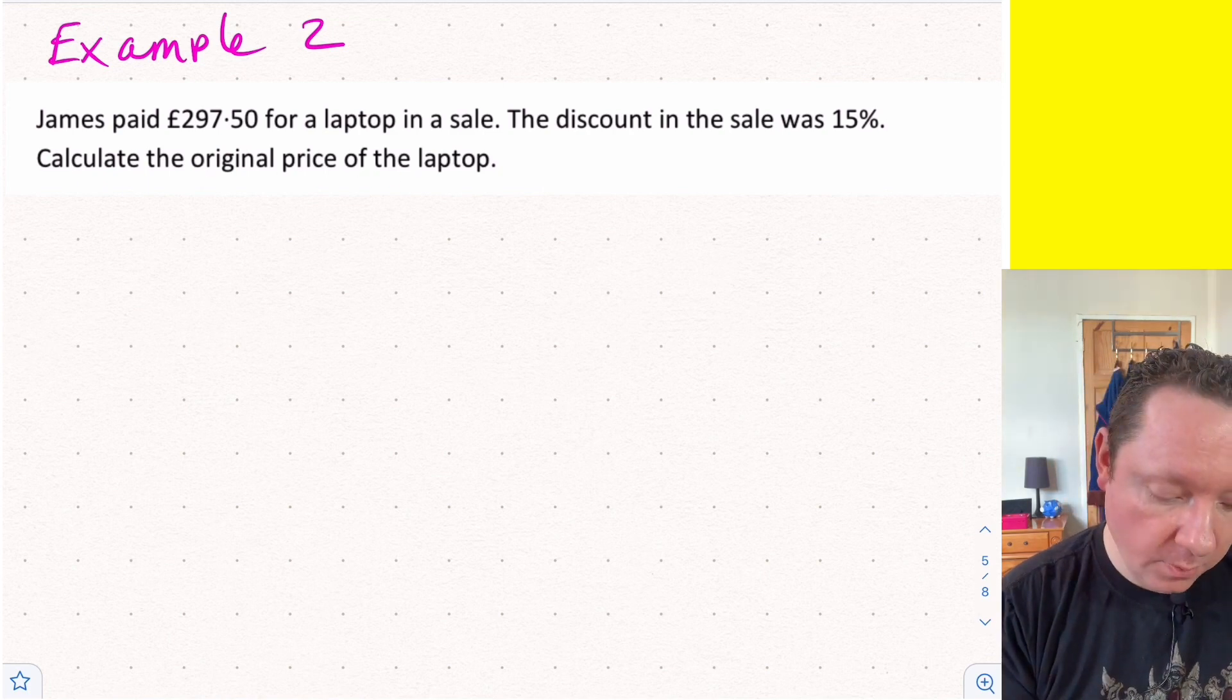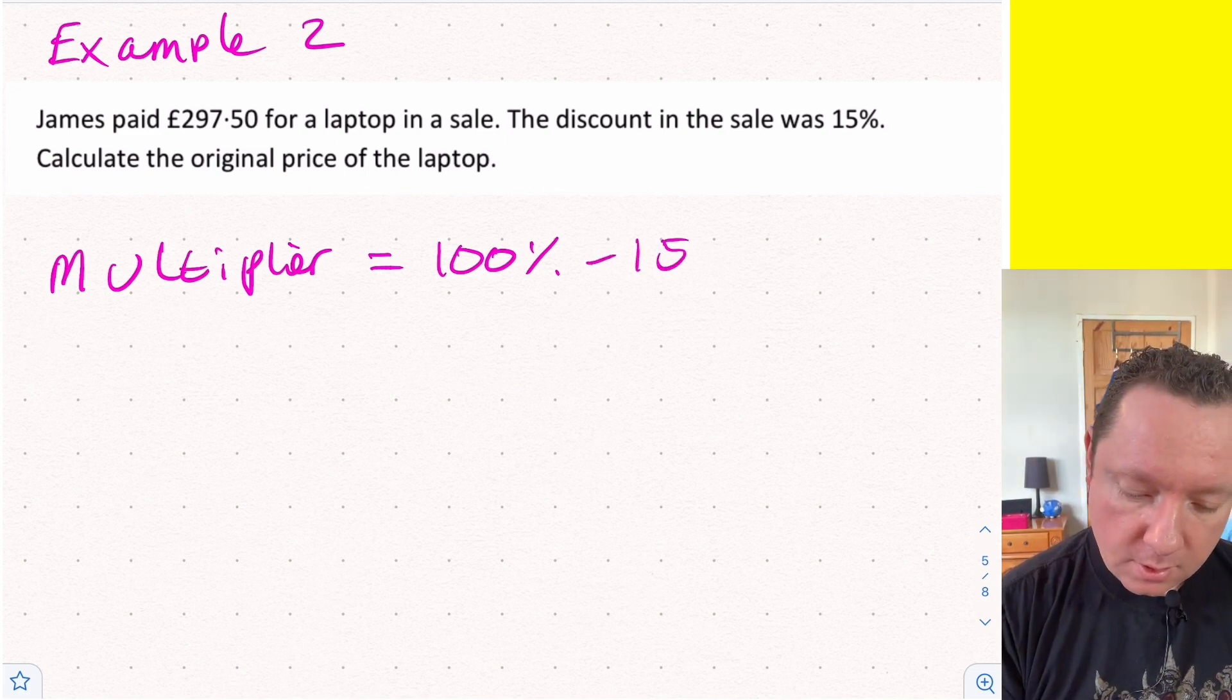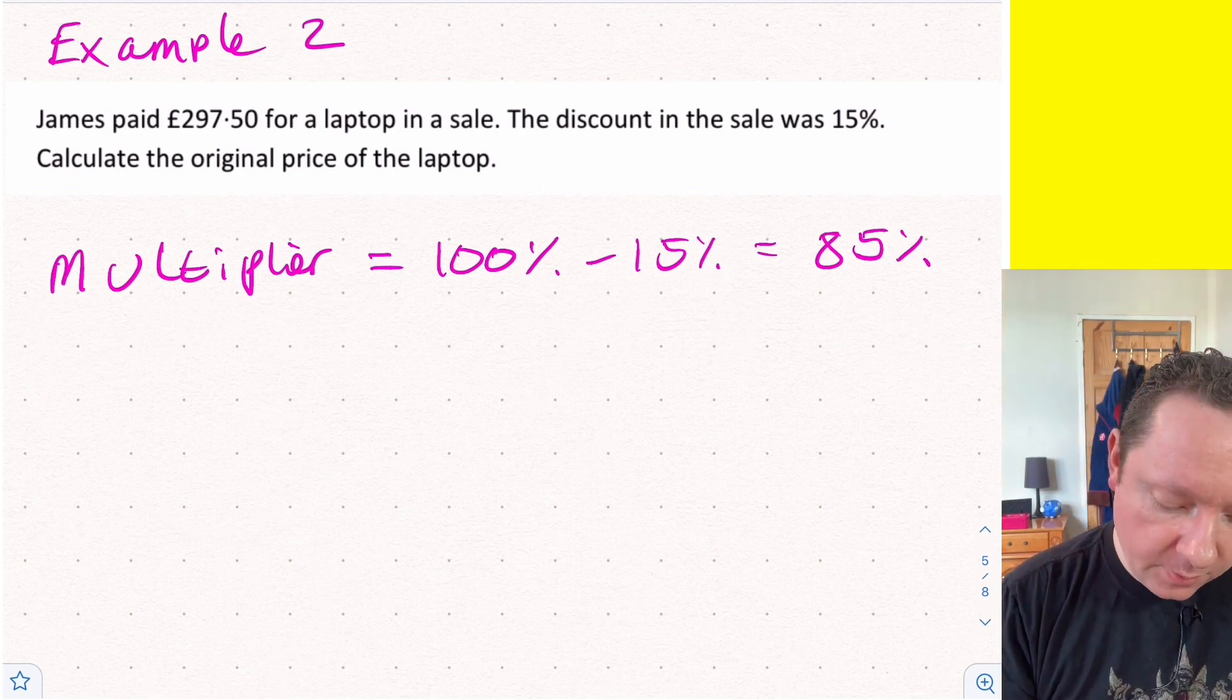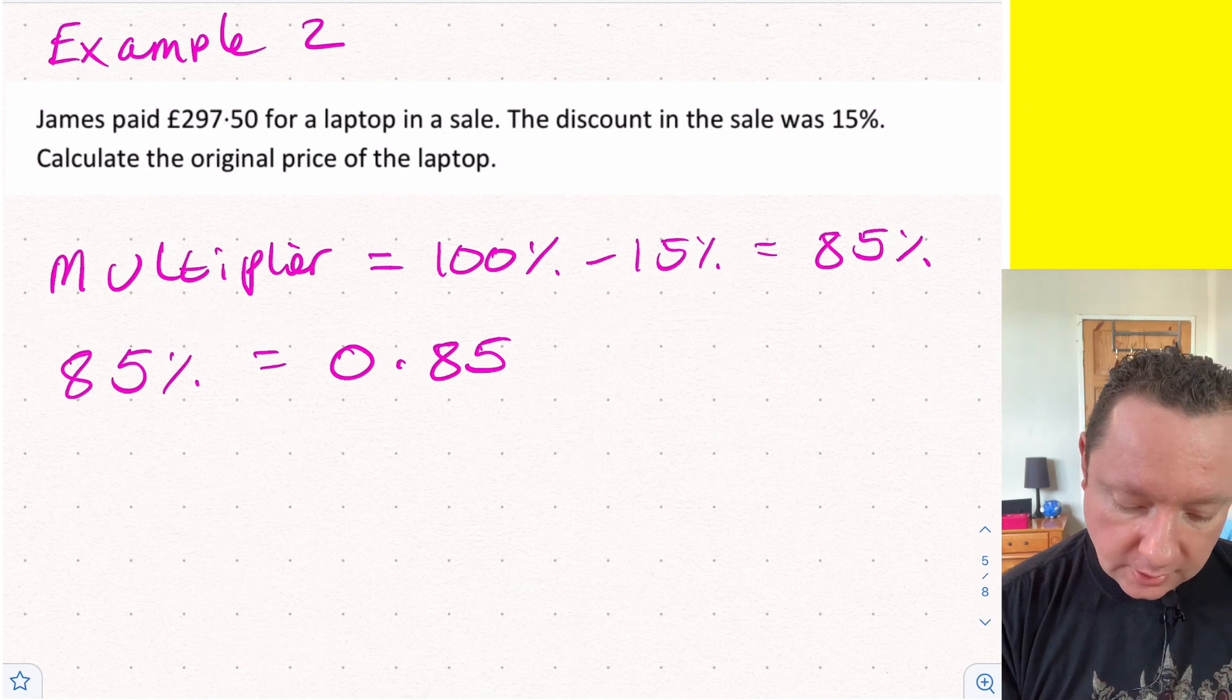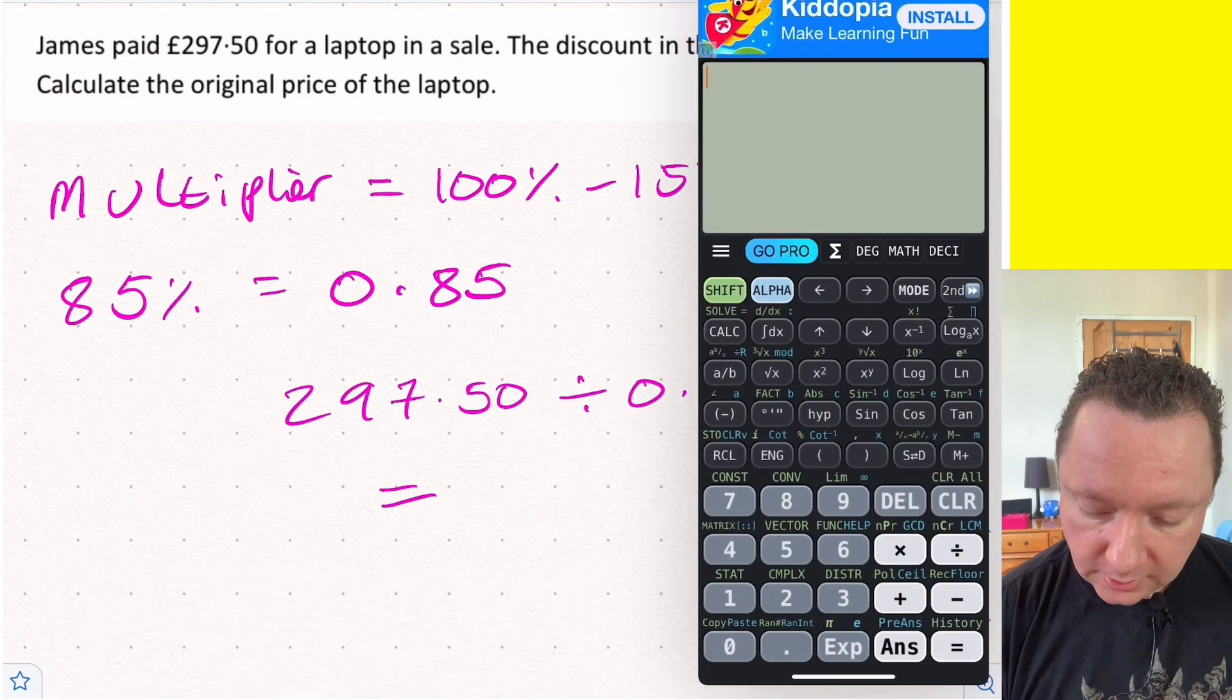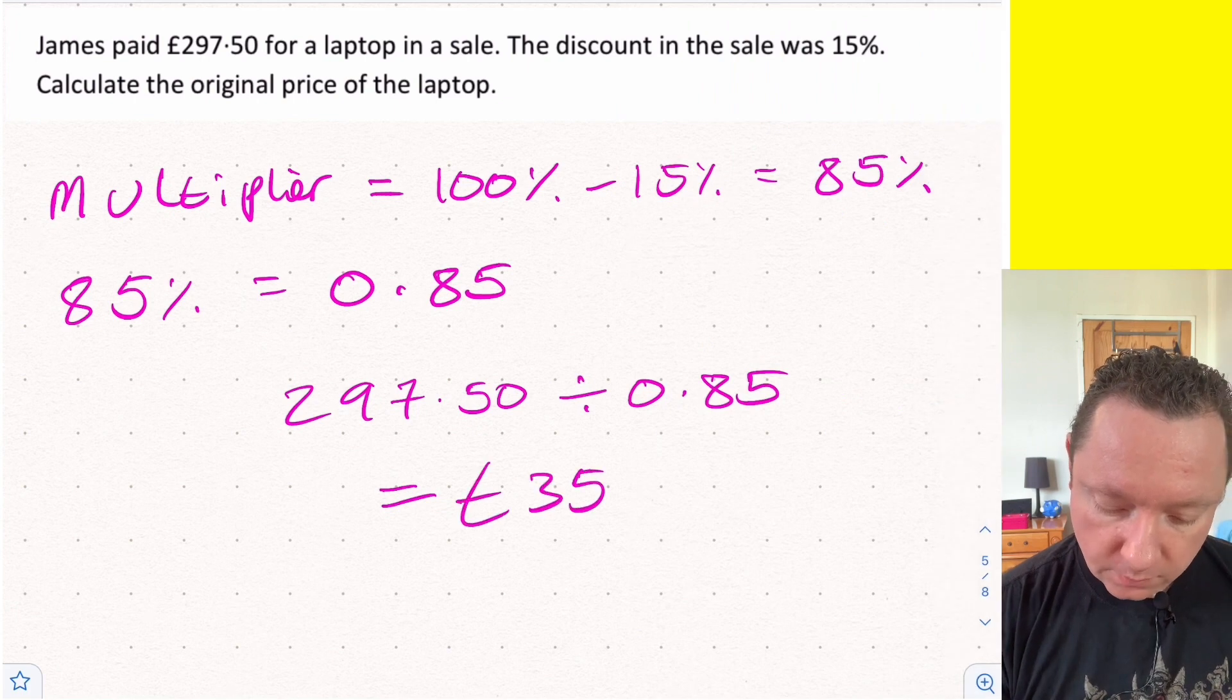Next example: James paid £297.50 for a laptop. The discount in the sale was 15%. Calculate the original price of the laptop. Start it in the same way - multiplier. We've got 100%, discount in sales went down, minus 15% equals 85%. 85% as a decimal is 0.85 (85 divided by 100). So we just take our money, £297.50, divided by 0.85 to get back to the original price. Calculator: 297.50 divided by 0.85 equals £350, another nice round number.